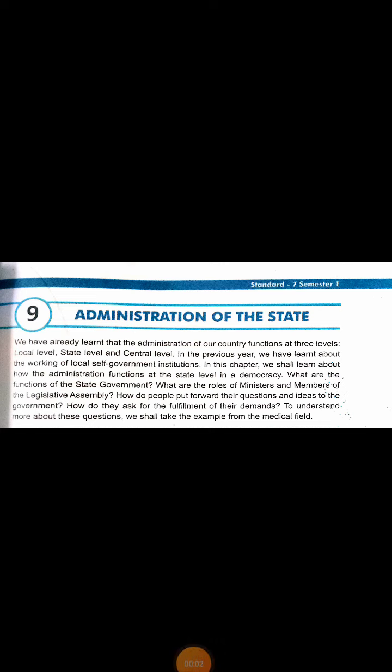Welcome to all 7th standard students to our subject Social Science. Today we will discuss lesson number nine. This chapter is included in your second unit test along with chapters one, two, three, and nine. This ninth chapter is a continuation of our third chapter, and in it we will learn about the administration of the state — the state government.